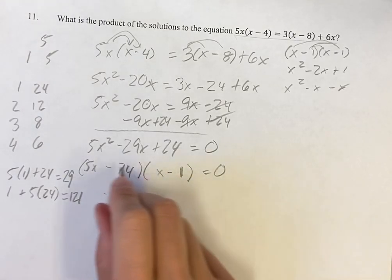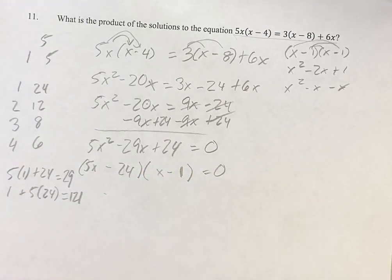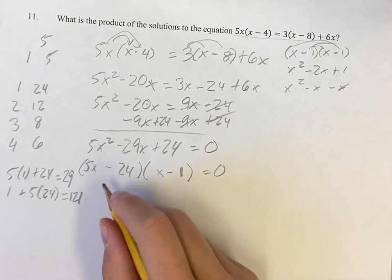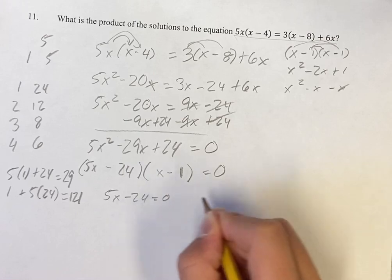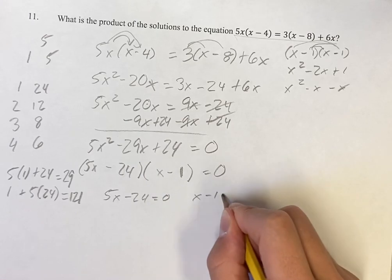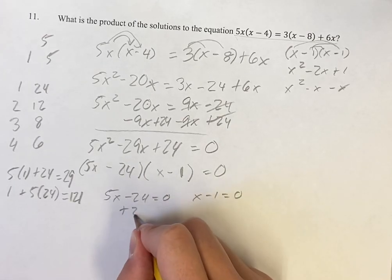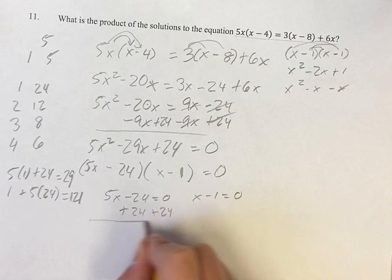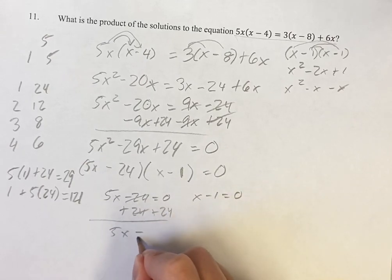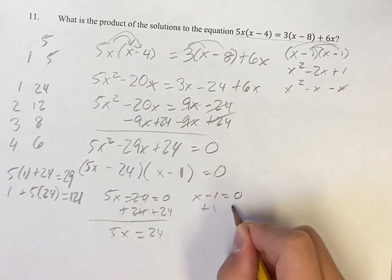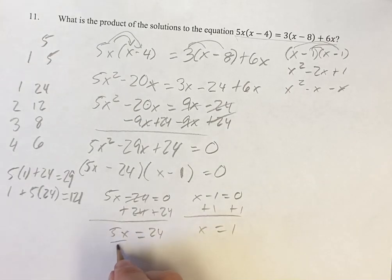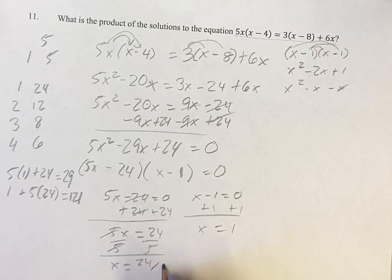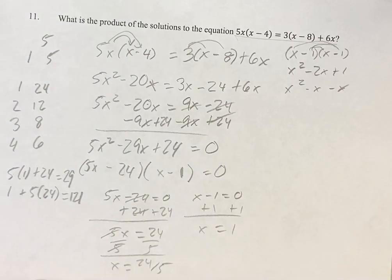For the product to equal 0, one factor must equal 0. So either 5x minus 24 equals 0, or x minus 1 equals 0. Solving: 5x equals 24, so x equals 24 over 5, which can't be simplified. And x equals 1.